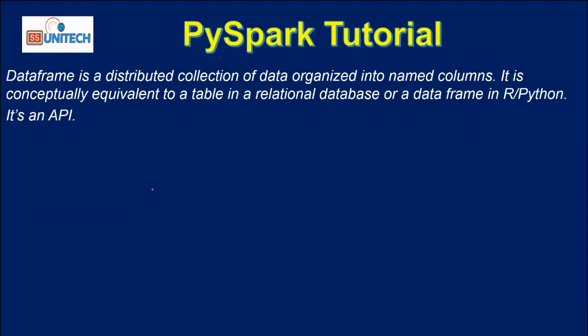A DataFrame is a distributed collection of data organized into named columns. For example, your data will be organized in a distributed format as a table, having columns and rows. It is conceptually equivalent to a table in a relational database — similar to a table in SQL Server with a table name, column names, and rows. In PySpark, Python, or R, this structure is called a DataFrame, and it is also an API.